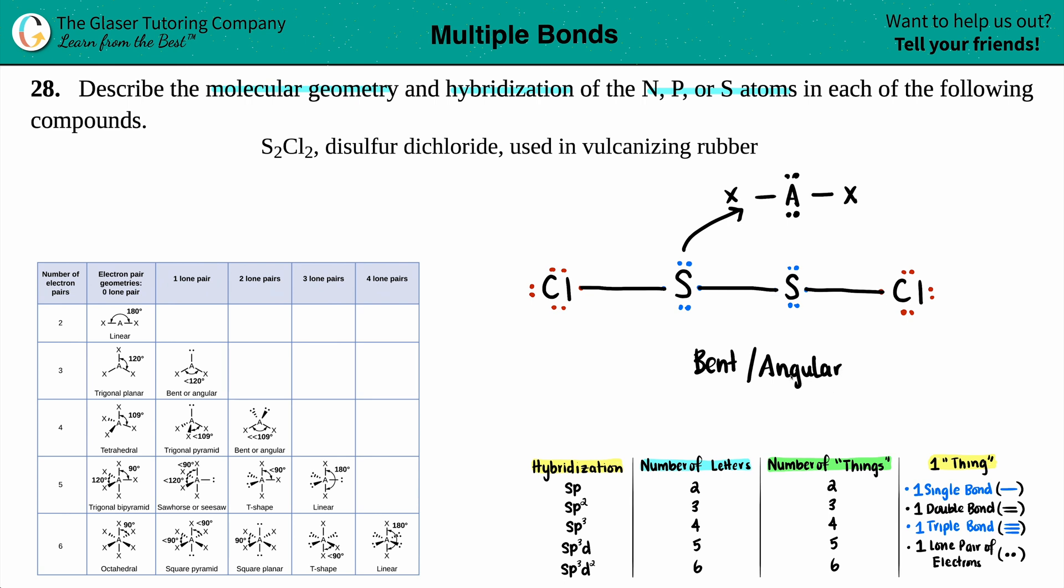Now we can identify what the hybridization is. Hybridization is your list of five letters, and we can go through all of this, but I just kind of want to show you that it is not a coincidence that there are five tiers for hybridization.